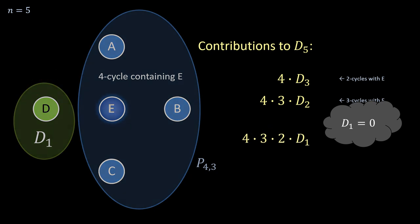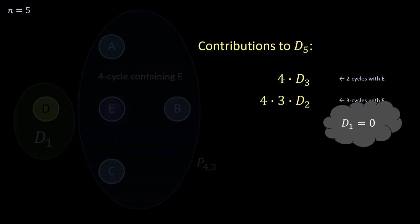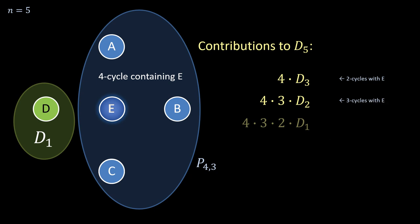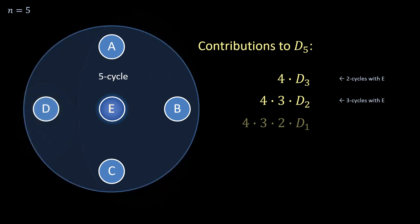But let's not, because the general pattern is what we're after, and this term is definitely part of it. Finally, e can be part of a set-spanning five-cycle, of which there are four permute four, or simply four factorial.